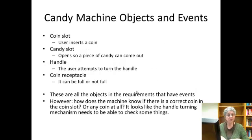So with the Candy Machine, if we think of the objects and their events, the machine has a coin slot that the user can put a coin in. There's a candy slot that opens so the candy can come out. There's a handle that the user can turn or attempt to turn. And there's a coin receptacle where the coins go. Those are the only objects that the user, the person trying to buy candy, is going to have any kind of interaction with.